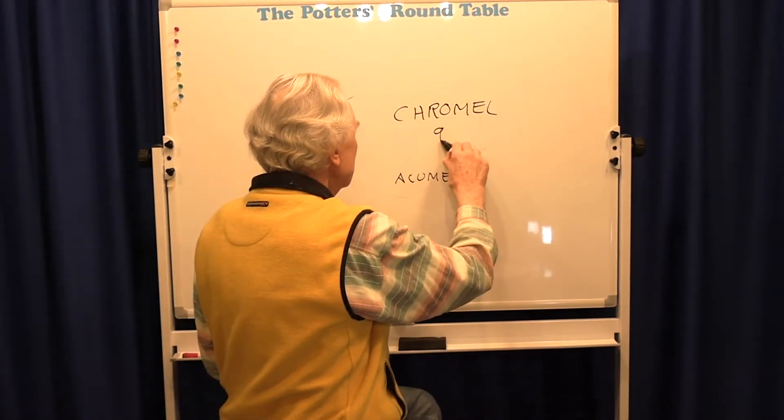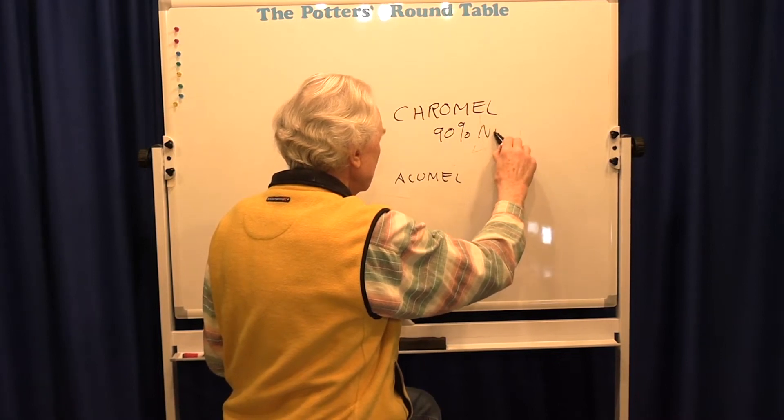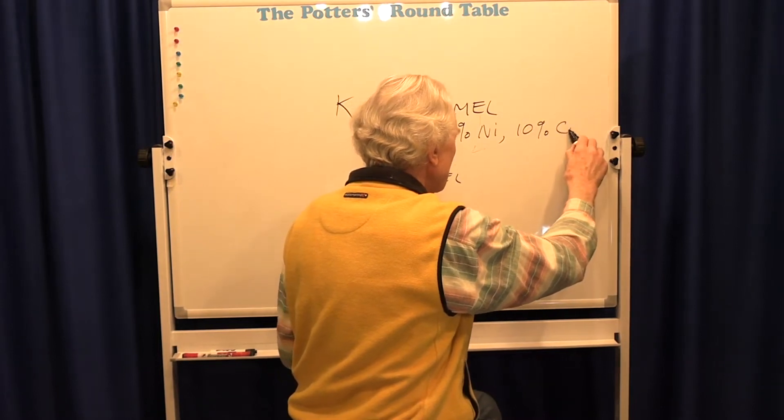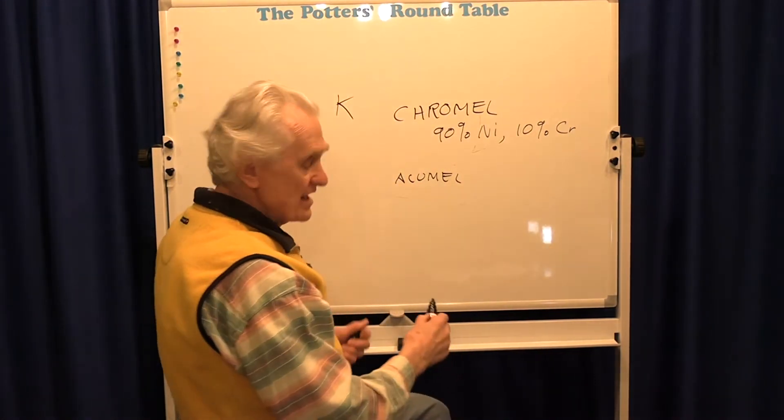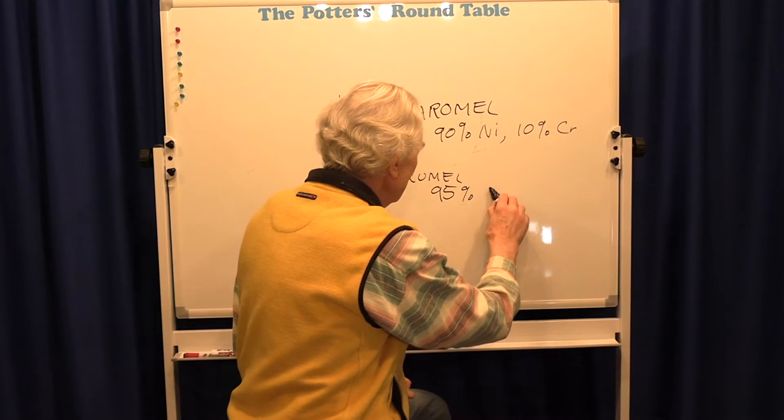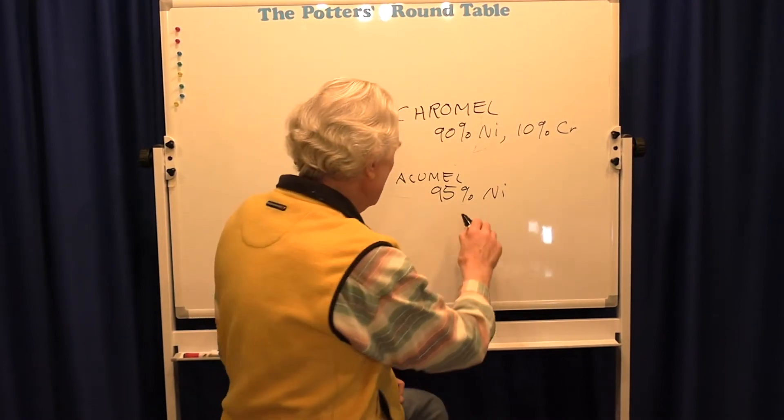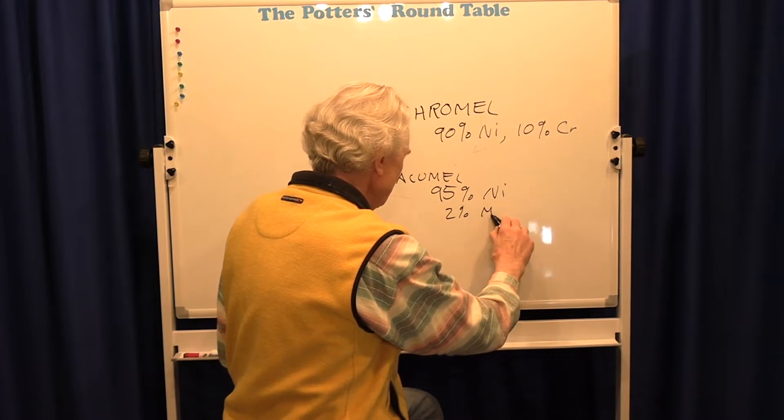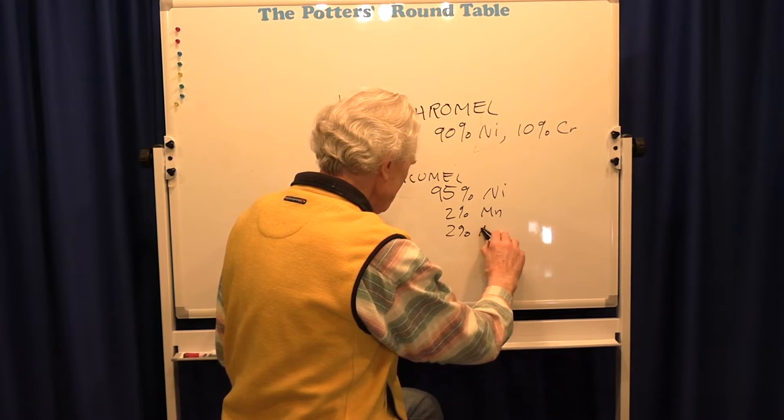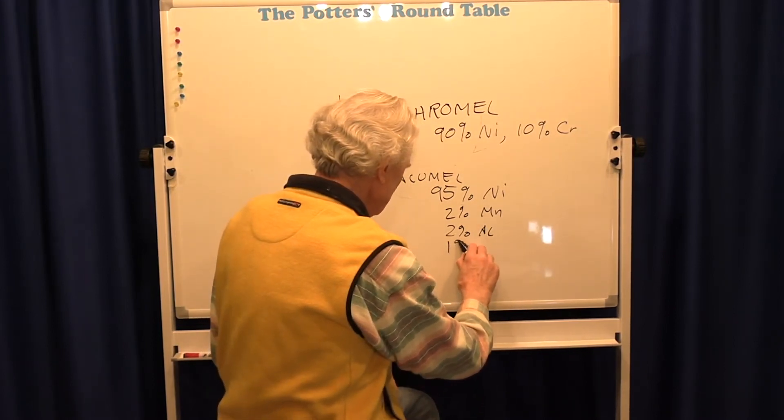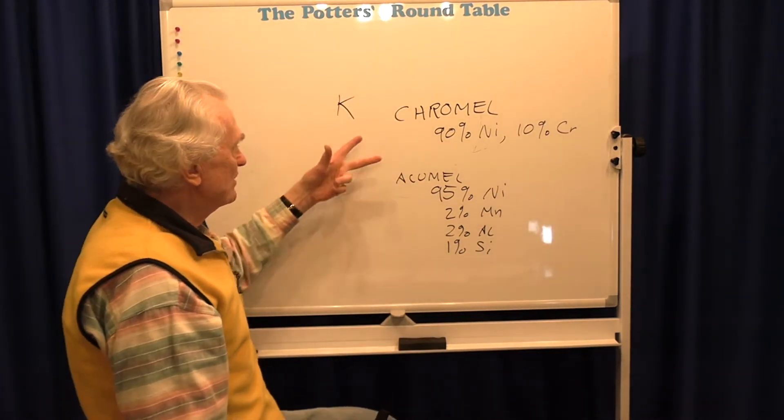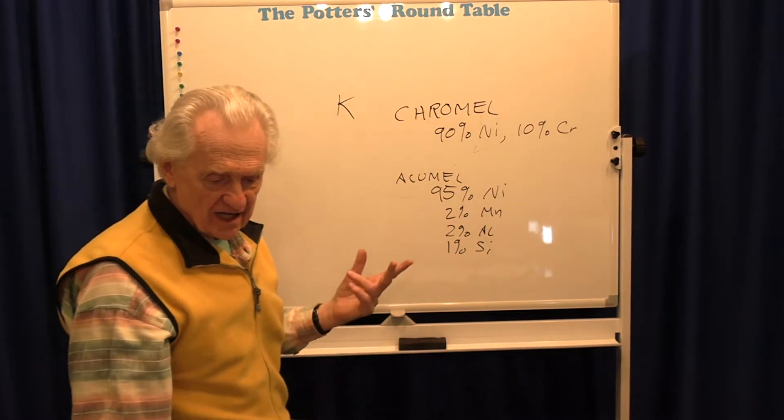The chromel is 90% nickel and 10% chrome—this is chrome, not chromium oxide, because these are metals. And the alumel is 95% nickel and 2% manganese and 2% aluminum and 1% silicon. So even though they both have a lot of nickel in them, they're different enough that when I connect these two wires together, I can produce a voltage.